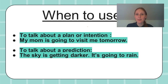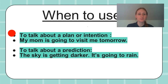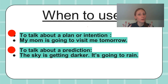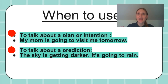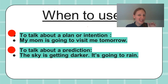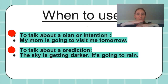Let's talk about when to use 'going to.' We use it to talk about a plan or intention: 'My mom is going to visit me tomorrow' or 'I am going to visit my mom tomorrow.' It's our plan, our intention — what we want to do. We also use it to talk about a prediction: 'The sky is getting darker — it's going to rain, I think.' We don't really know for sure; this is a prediction. It's going to be sunny today. It's going to snow. While it may seem a little complicated, the more you use the formula, the better you become at it. And this is your building block, your foundation for learning more English.